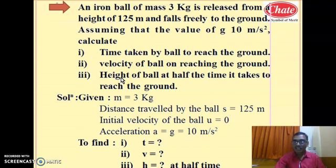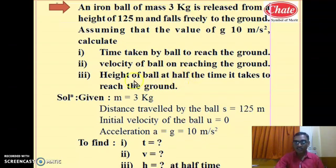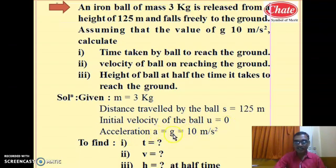To solve this, we first calculate the distance travelled by the ball, since the motion is from maximum height towards the ground. The position is always measured from the ground, because height is always measured from the ground, not from the highest point. Mass of the ball is 3 kg, distance travelled is 125 meters, initial velocity is 0, and acceleration equals g = 10 meter per second square. Since motion is downward, g is taken as positive — it is acceleration, not retardation.